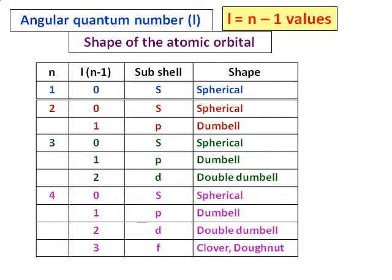So far, we've learned the first quantum number — the principal quantum number — which gives me the level or position of the electron. Then we defined the angular quantum number l, which takes n minus 1 values and tells us how many rooms are in each level and their shape. Next, let's go further and find out how many seats each room has, and how many people we can accommodate in them.